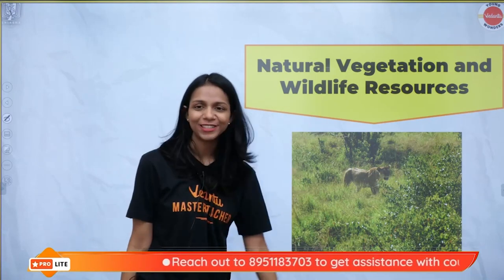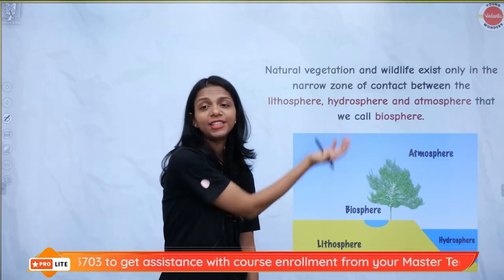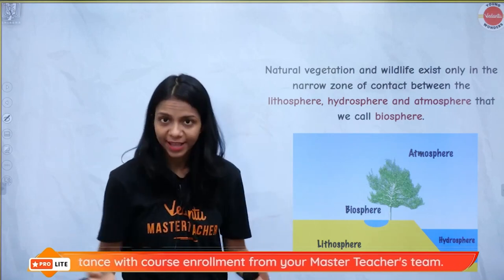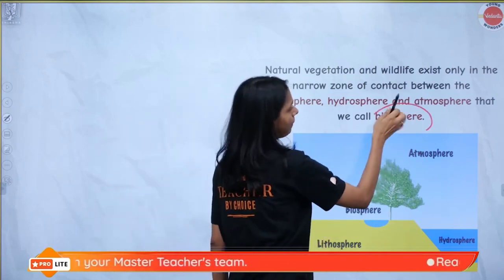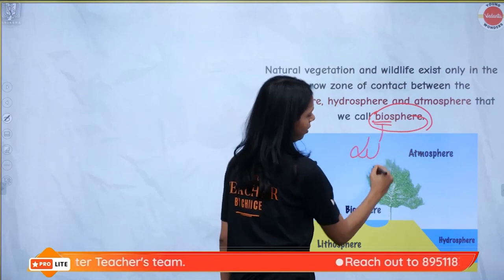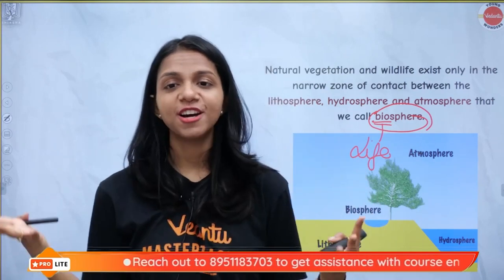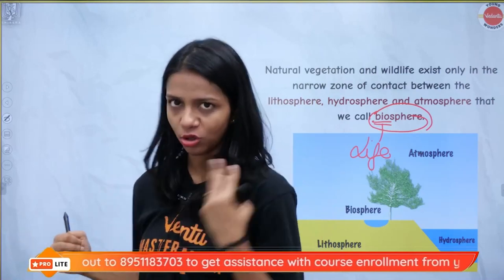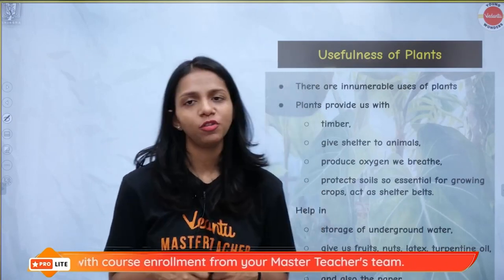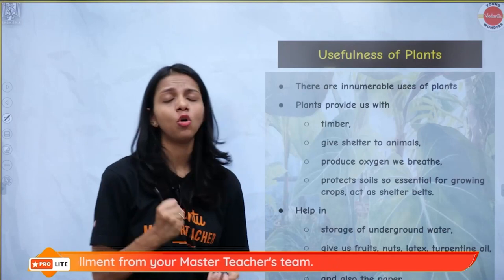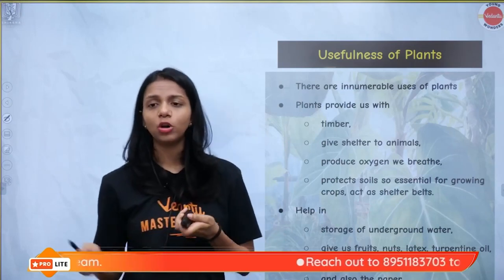Now let's go to the second resource: natural vegetation and wildlife. Birds, animals — the lion, tiger, rhinoceros, peacock — all these things can exist in the biosphere. Bio means life, so the biosphere is the sphere of life found in areas where there is land, water, and air — the lithosphere, hydrosphere, and atmosphere. Plants are useful because their roots hold soil and prevent soil erosion; they give us timber, oxygen, fruits, nuts, and turpentine oil.